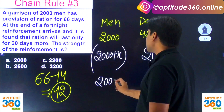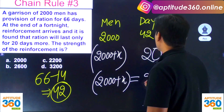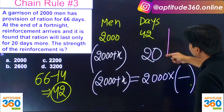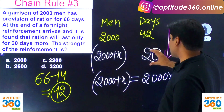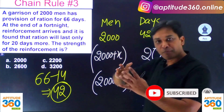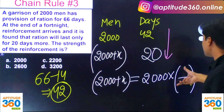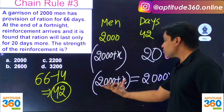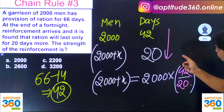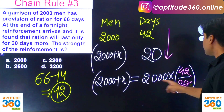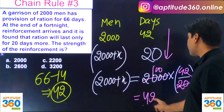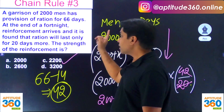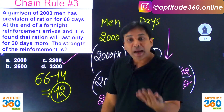The new strength is 2000 plus x, and the food is now sufficient for only 20 days. So we can write: 2000 + x = 2000 × (42/20). Since days are decreasing from 42 to 20, the ratio is 42/20, which is more than 1, meaning more men. Simplifying: 2000 × 42/20 = 2000 × 2.1 = 4200. So 2000 + x = 4200, giving x = 2200. The reinforcement strength is 2200 men.